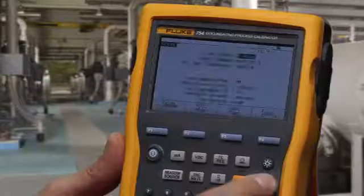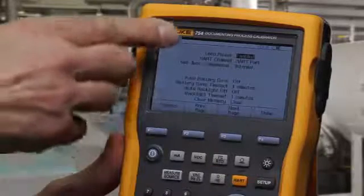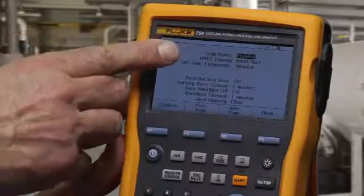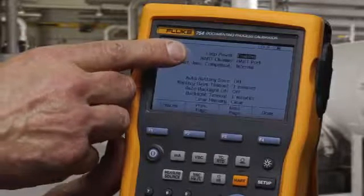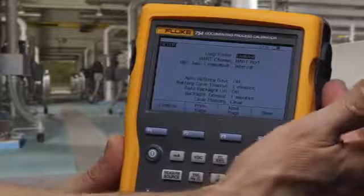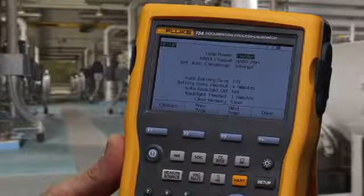In the setup screen, we can configure and turn on loop power. We can change the direction of the HART communication signal from the digital connector on the side to the milliamp measurement ports.